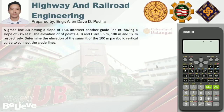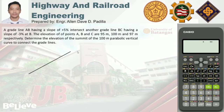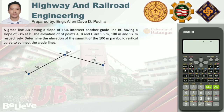Next example: grade line AB has a slope of positive 5 percent and intersects grade line BC with a slope of negative 3 percent at B. The elevations of points A, B, and C are 95 meters, 100 meters, and 97 meters respectively. Determine the elevation of the summit of the 100-meter parabolic vertical curve connecting the grade lines. Drawing the figure: AB ascends at 5 percent, BC descends at 3 percent, forming a crest curve.